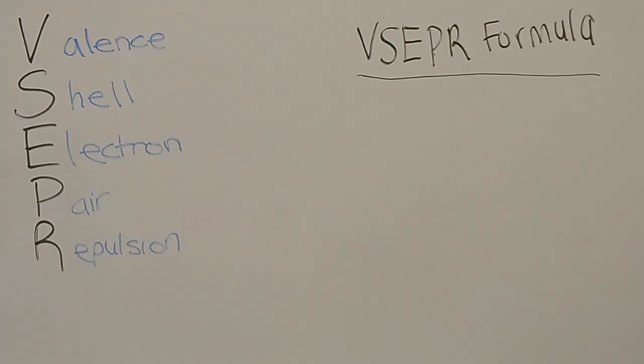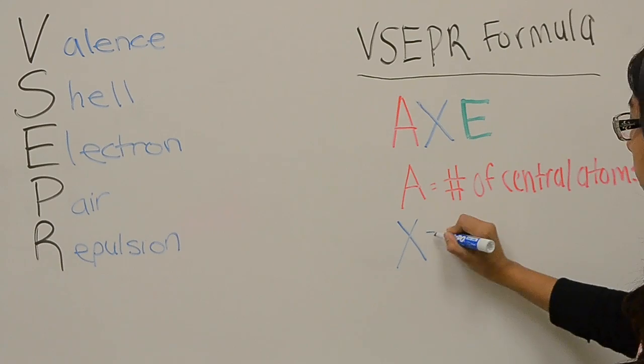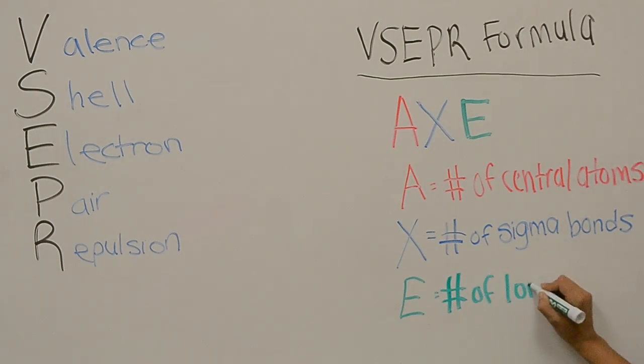Now let's define the VSEPR formula, AXE. A stands for the number of central atoms, X equals the number of sigma bonds, and E equals the number of lone pairs.